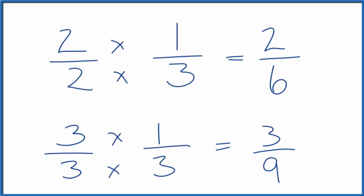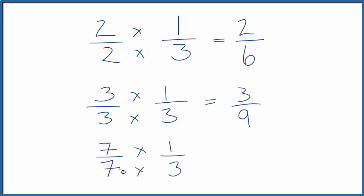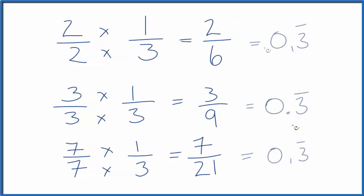Let's do one last one. How about seven over seven? Seven over seven is still one. Seven times one is seven, and seven times three is 21. So seven twenty-firsts is equivalent to one-third, two-sixths, or three-ninths. If you divide these, you'll get the same thing for each one — zero point three repeating.